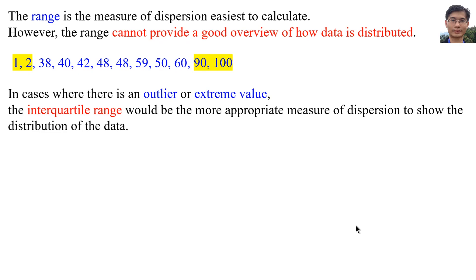The interquartile range would be the more appropriate measure of dispersion to show distribution of data. For example, if we find the range, then the range is 100 minus 1 equals 99. If we tell other people that the range of data is 99, they think the spread of data is a lot. However,